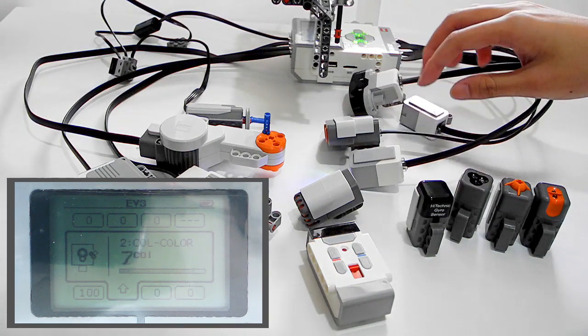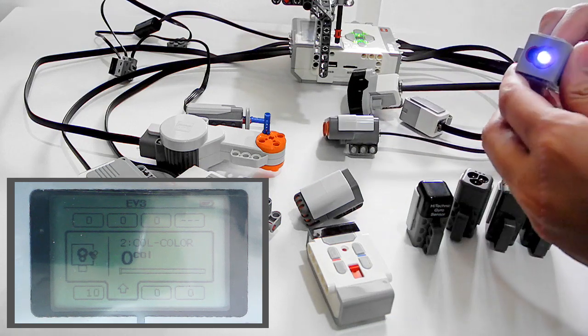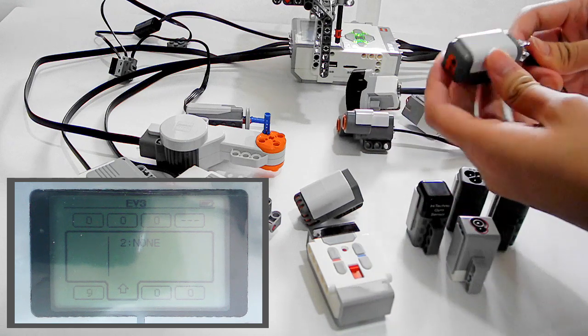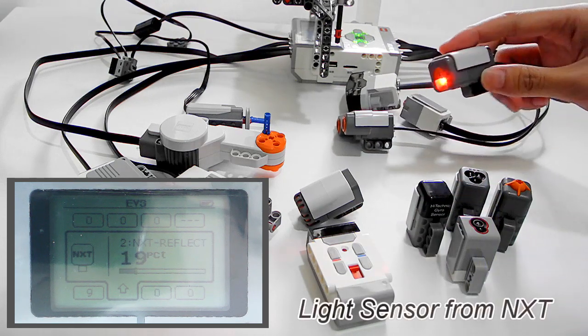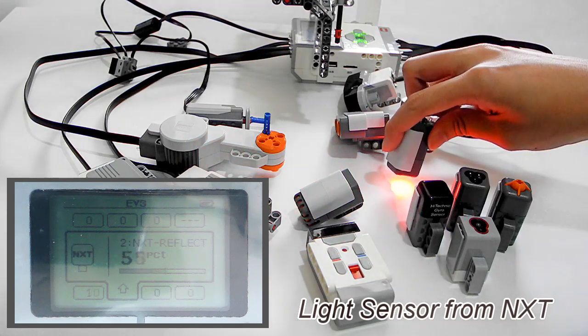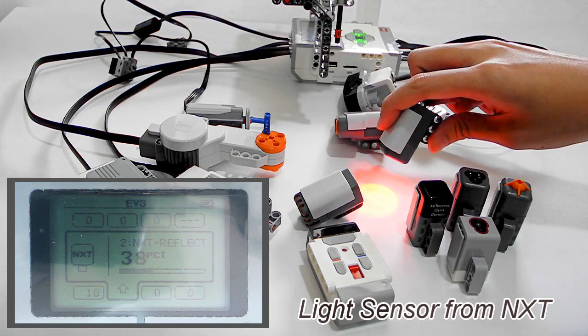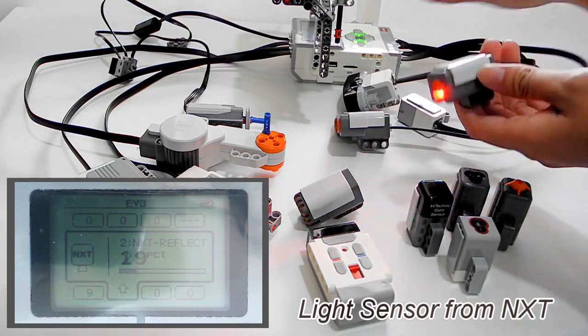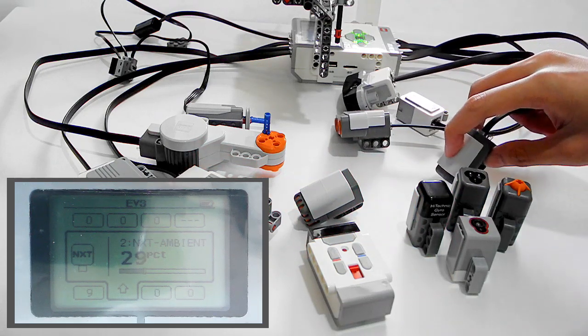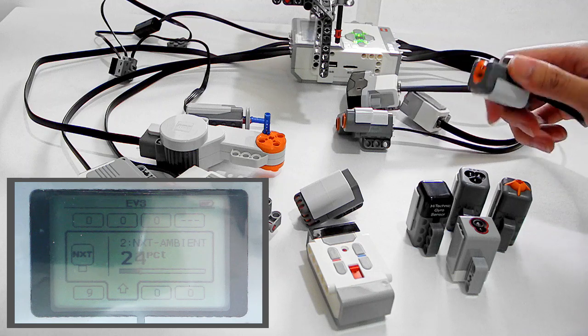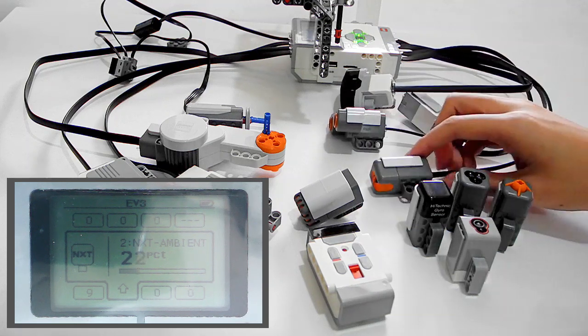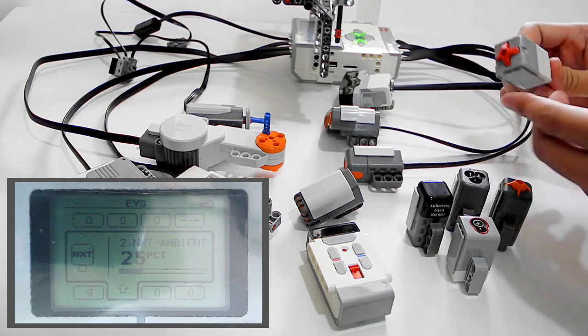And the next one, I'll change it to another sensor like this, the NXT light sensor. And the first mode is used to check the light intensity actively, and the second mode is used to detect the light passively.